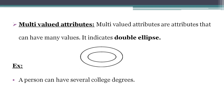Next one: Multi-Valued Attribute. A multi-value attribute means one attribute can hold a number of values. For example, a person can have several college degrees. This multi-value attribute is represented in a double ellipse format — a double oval shape.